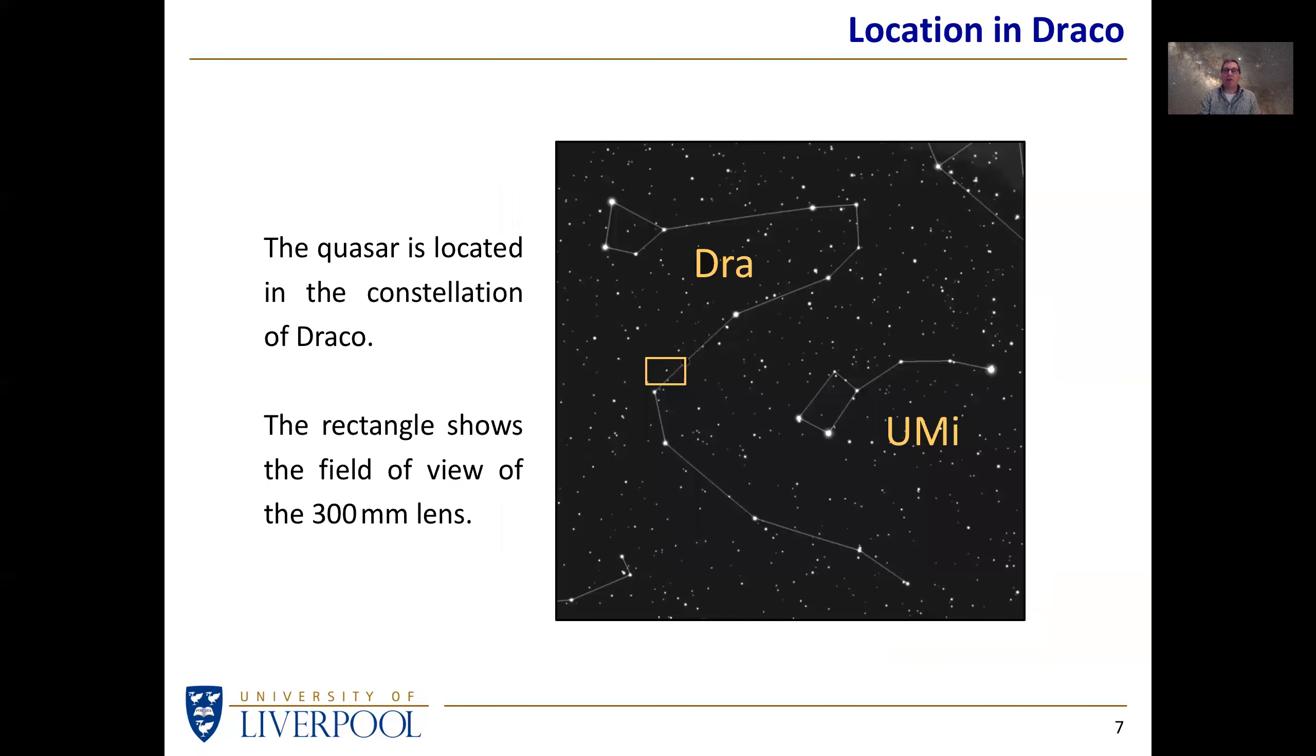Here's where the quasar is. Remember the quasar ID number is also its coordinates so I knew where in the sky to look. I pointed the camera in the constellation of Draco. Here's Draco, here's Ursa Minor, there's Polaris on the right-hand side. Here we see the field of view of a 300 millimeter lens. As it happens the quasar sits very close to a fifth magnitude star which I've put in the middle of this field of view.